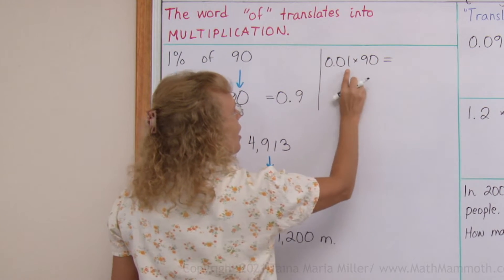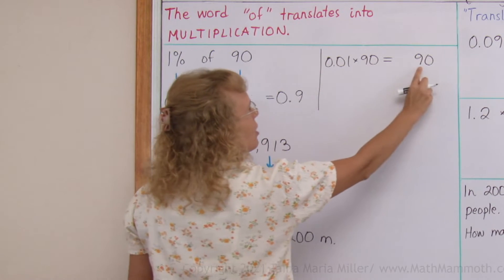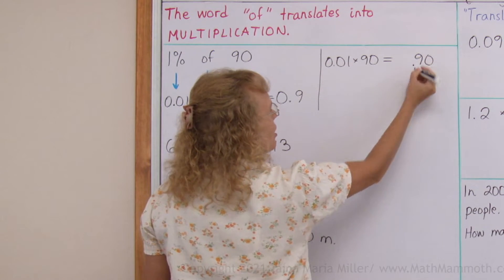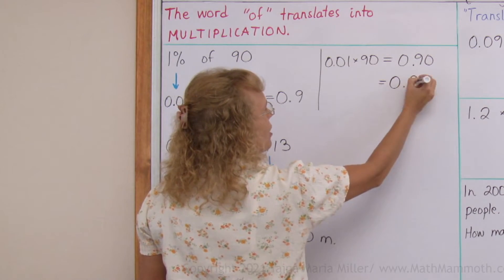Let me show you real quick over here how it goes. In case you've forgotten, I go 1 times 90, 90. Here's two decimal digits so this needs to have two decimal digits. The point has to go here and then it can be simplified into 0.9.